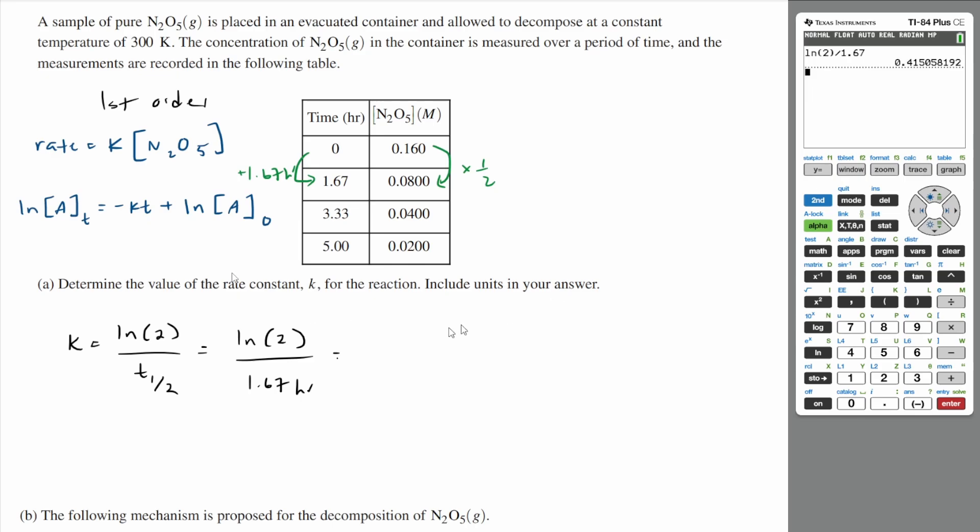that is about 0.415 per hour. And that's your unit. The unit is just one over hours or hours to the negative first power. Let's go on to B.